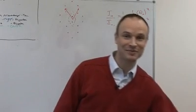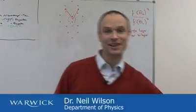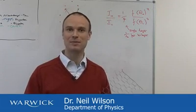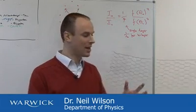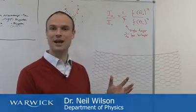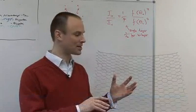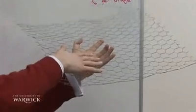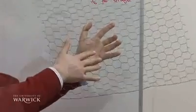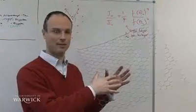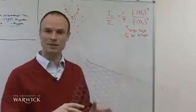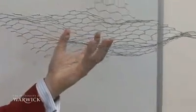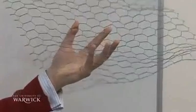Graphene is a fascinating material. At first glance, you might think the structure of it would be simple. It's a single atom layer thick of carbon atoms, arranged in a hexagonal structure, kind of like chicken wire. However, previous research has found that it's not flat, but rather it's rippled or distorted.